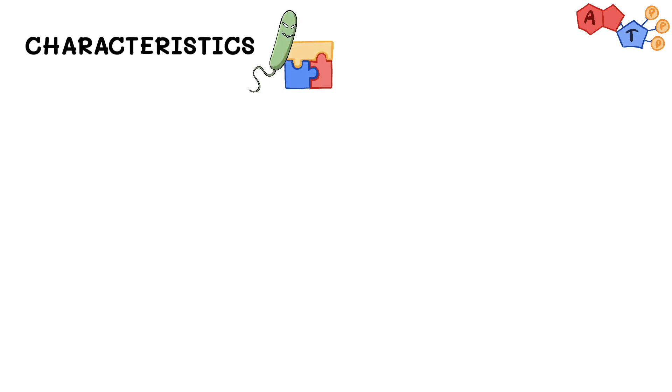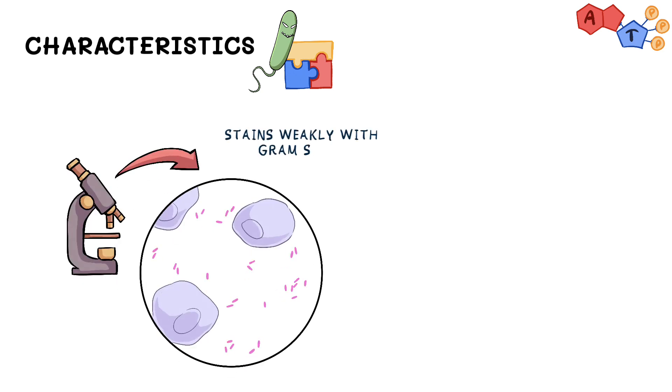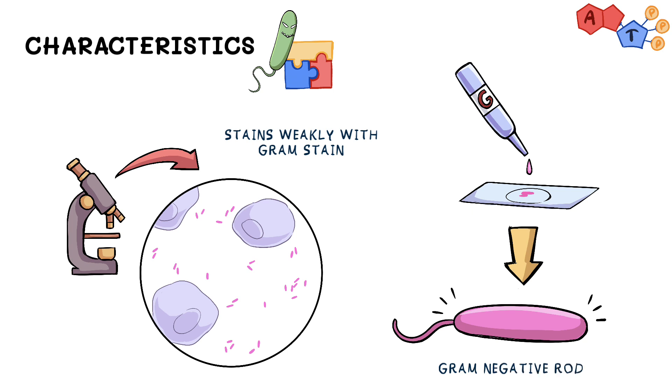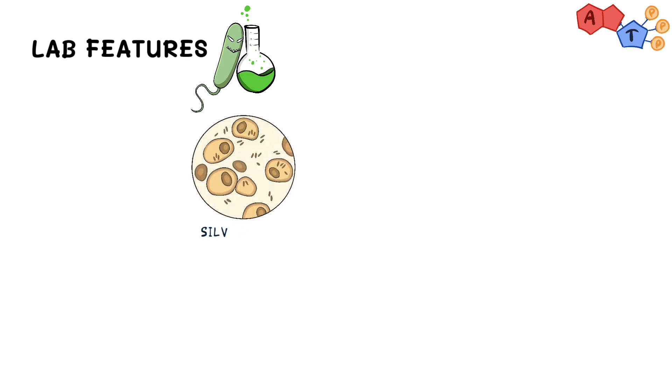Since it's an intracellular organism, it poorly stains with gram stain. However, it's still considered a gram-negative rod. Now in the lab, it does not gram stain well, which is why we use silver stain to visualize it.